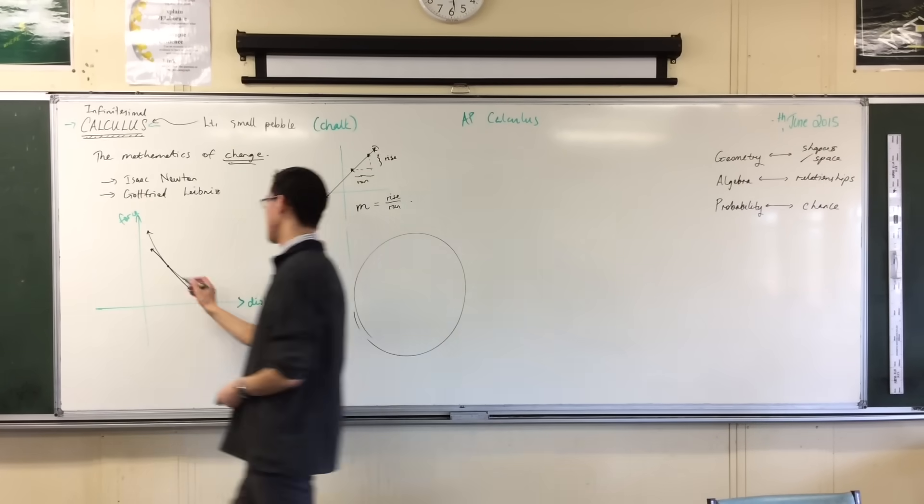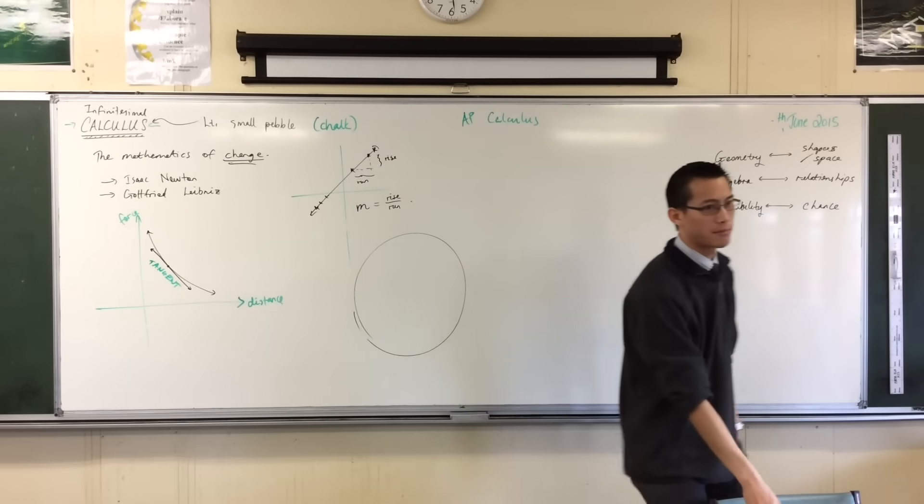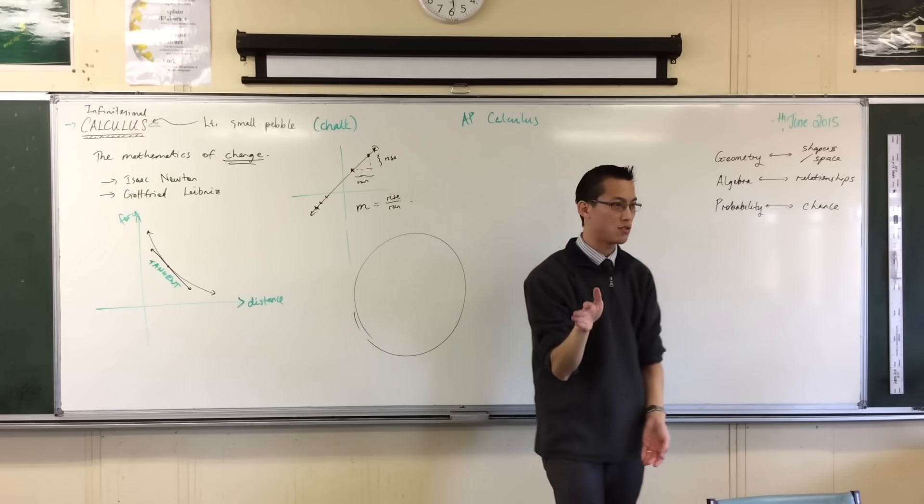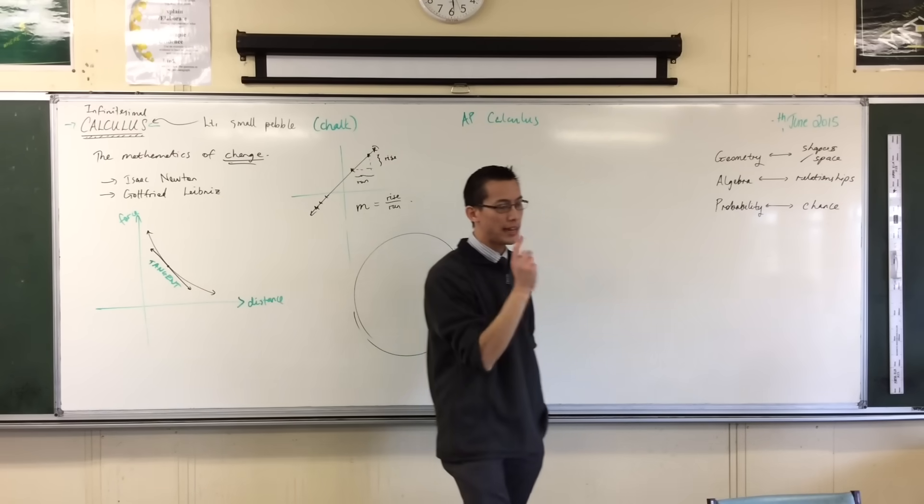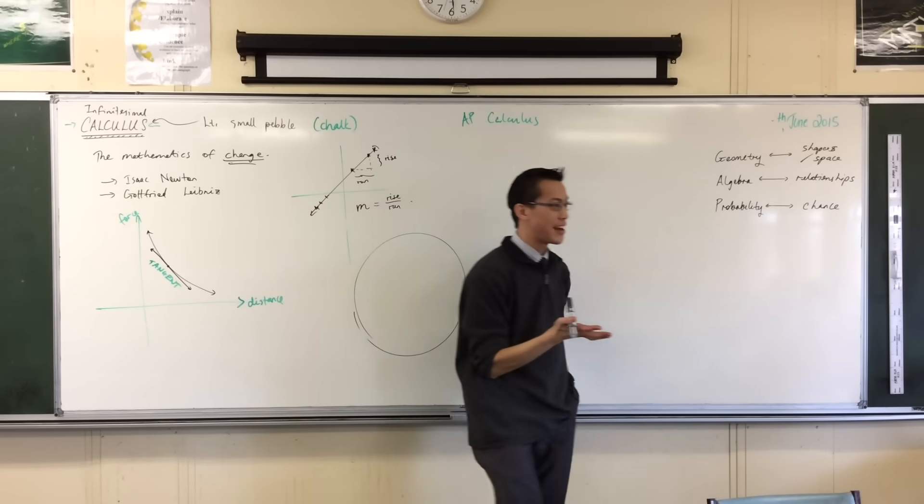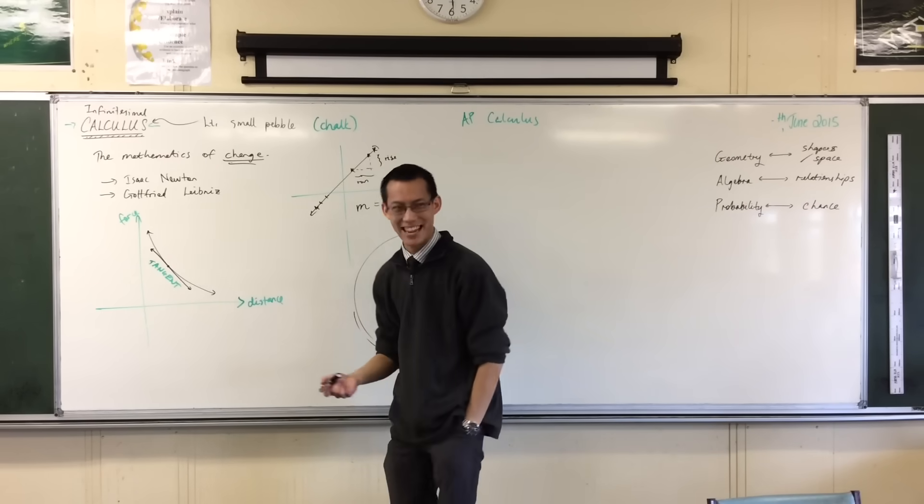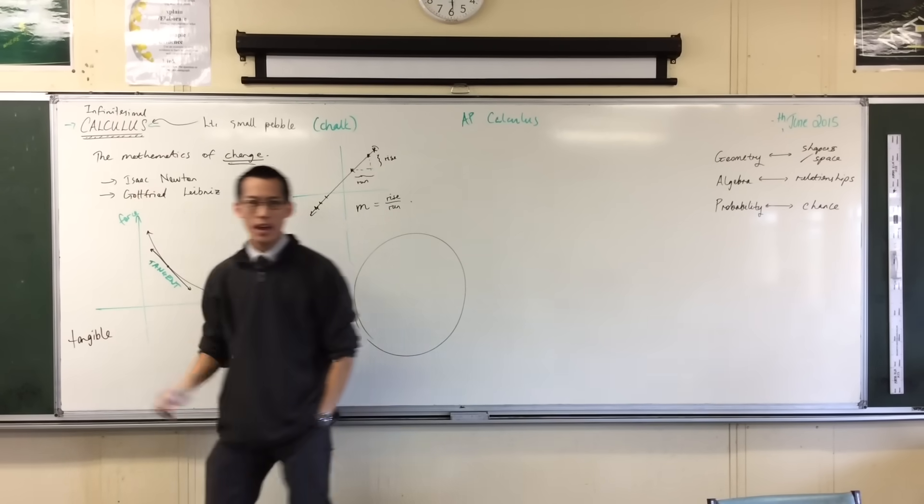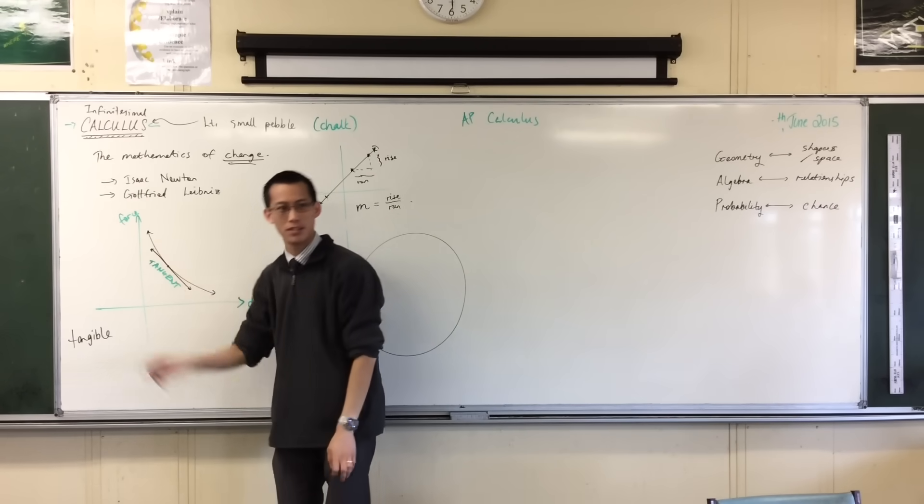The problem with working out the gradient of a tangent is that gradient is rise over run. You have to have some run, you have to have two points to compare between. Y2 minus Y1 over X2 minus X1, you need a Y2 and an X2. But a tangent by definition doesn't have two points, it's just got one. In fact that's why it's the word tangent. Does anyone know, we have another word in our English language which comes from the same root as tangent? They don't use it very often admittedly. Tangible. Tangible, what does tangible mean? It means you can touch it. So a tangent is something which just touches one point.